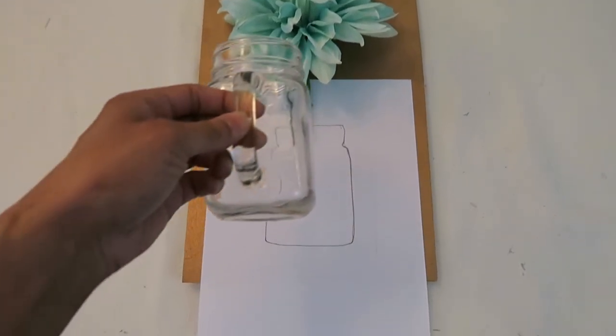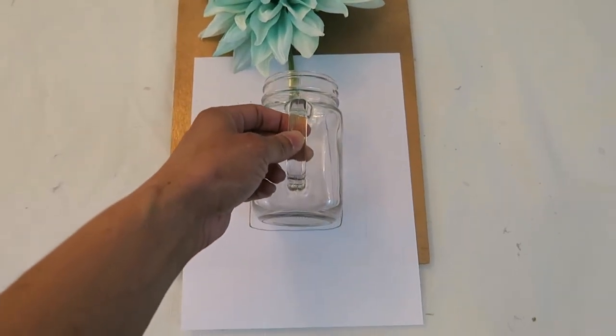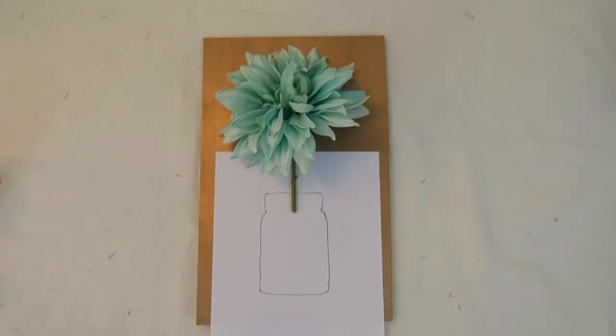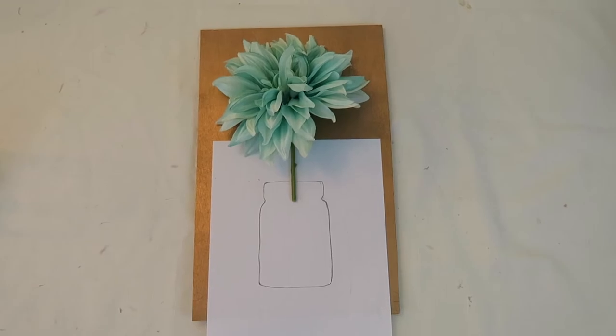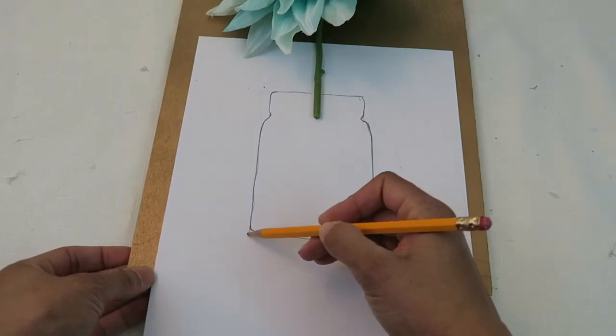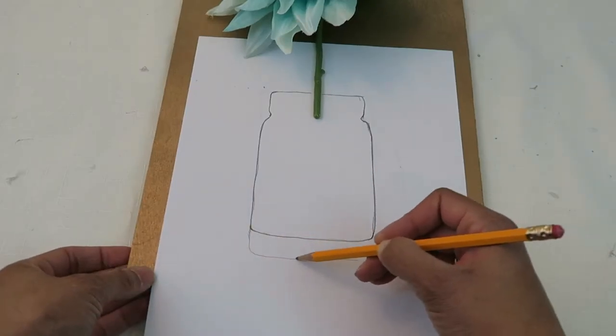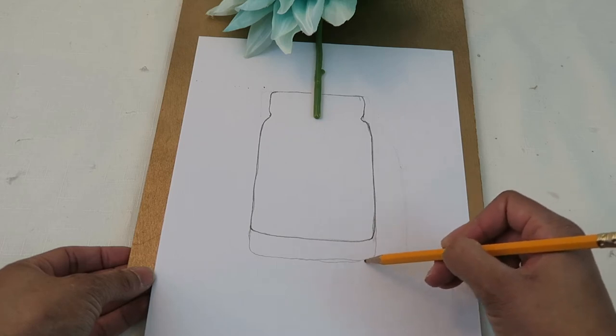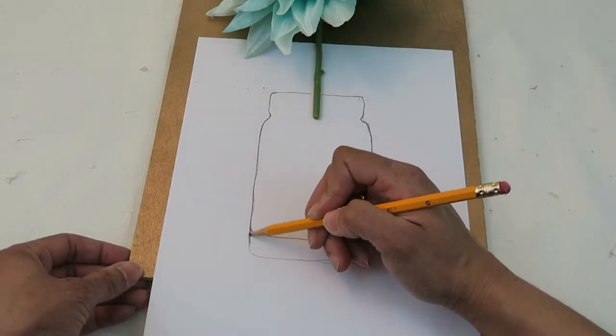I traced out an actual mason jar on a piece of paper and positioned it where I thought it needed to be. Once I had the jar there, I thought it needed to be a little longer. So I did extend it down a bit. And then I'm just using this as a stencil to add the nails. You'll see that I'm going to add the nails going around on all the pencil part and then I'm going to add the string.